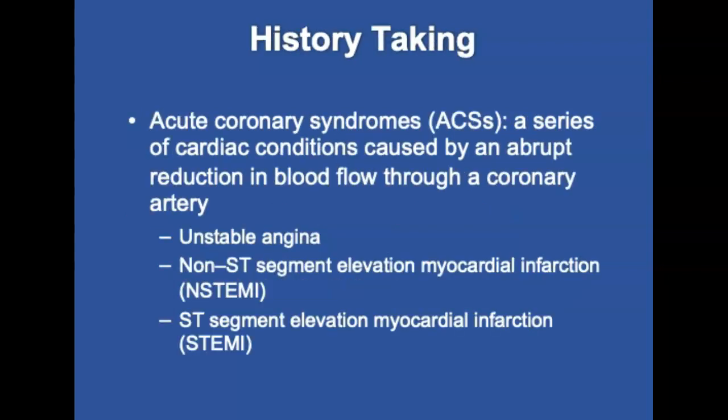Next is history taking using SAMPLE and OPQRST. Acute coronary syndromes, or ACS, are a series of cardiac conditions caused by an abrupt reduction of blood flow through a coronary artery. There are three major ACS: unstable angina, non-ST segment elevation myocardial infarct (N-STEMI), and ST elevation myocardial infarct (STEMI).